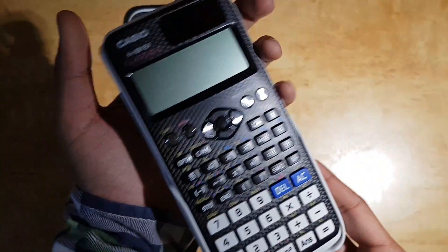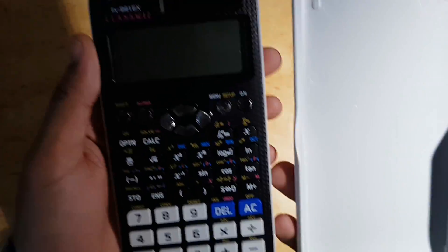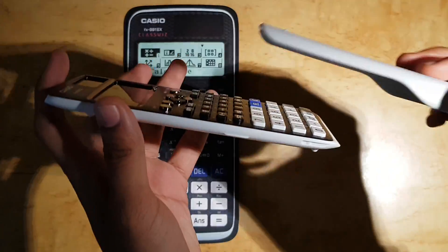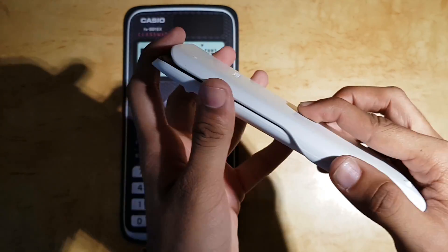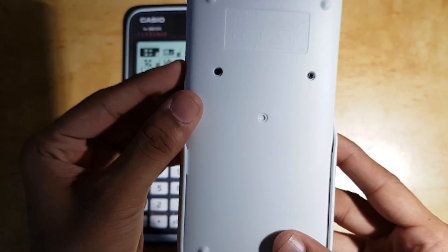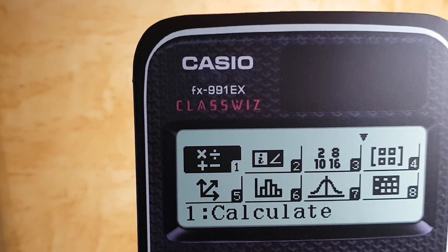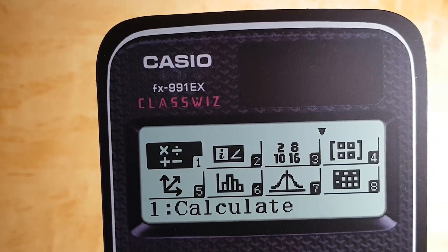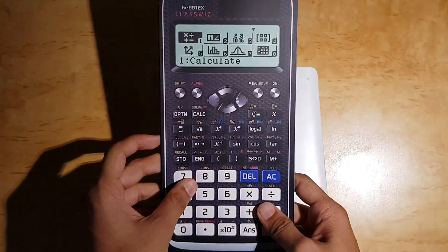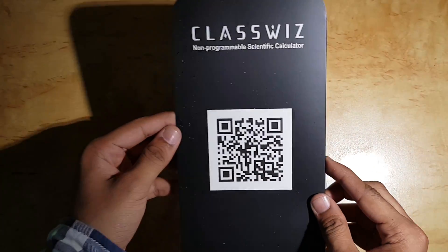This is the last glimpse of my video. I hope you like the calculator and my review. Do buy this calculator, this sleek white slim design calculator by Casio. The model number is ClassWiz FX-991EX. Do buy this, it's a really good calculator.